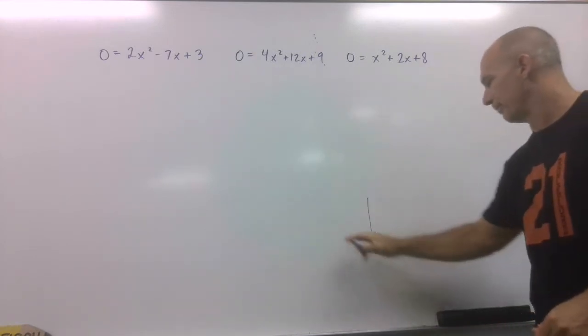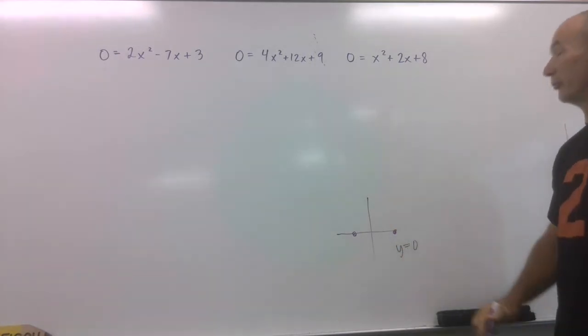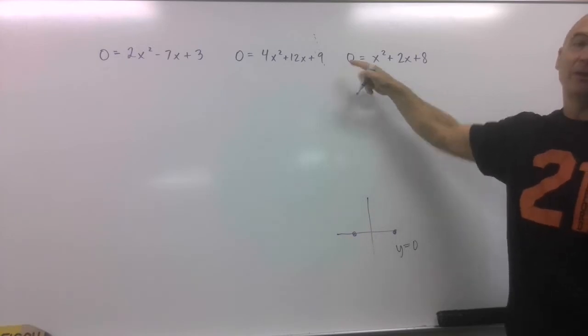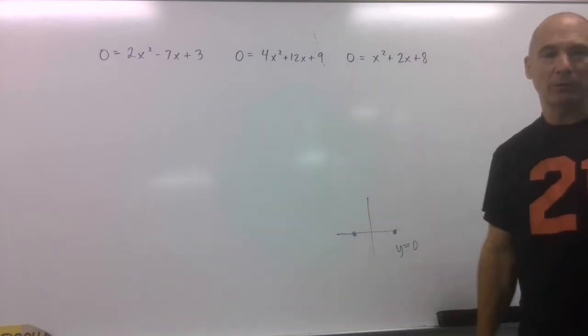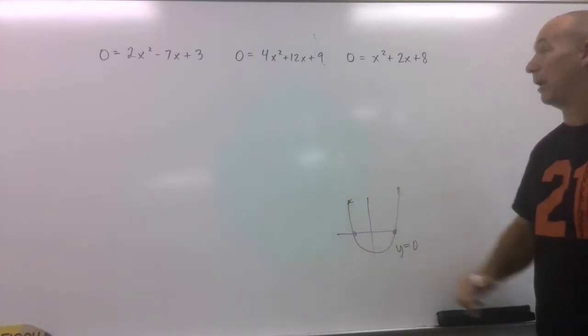Because remember, any point on my x-axis, y equals zero. So if this is delivered to you, y equals 0, the first thing you've got to do is set that y equal to zero so that you can find your x-intercepts. Because that's what your whole mission is right now.